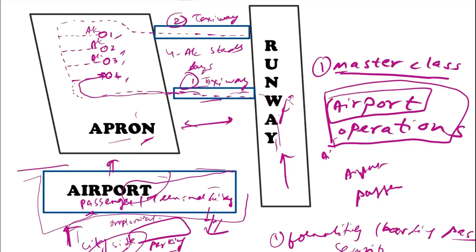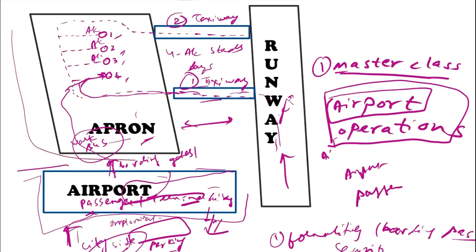Now that our aircraft has come from the taxiway and is standing on the apron, the passenger who is about to board will be moving out of the terminal building from one of the boarding gates. The passenger will go from here and, either by walking or by taking the bus provided by the airline, will go near to the aircraft.